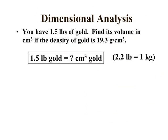Our next problem: you have 1.5 pounds of gold. We want to find its volume in cubic centimeters if the density of gold is 19.3 grams per cubic centimeter and they've given you the conversion factor 2.2 pounds in one kilogram. So you've got to take this and convert it into a simple question: 1.5 pounds of gold is how many milliliters or cubic centimeters of gold.